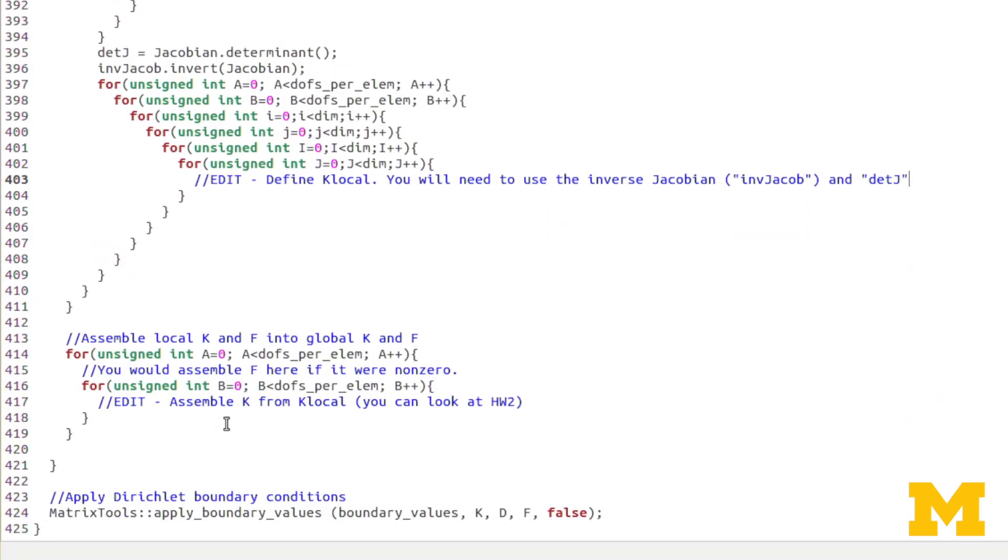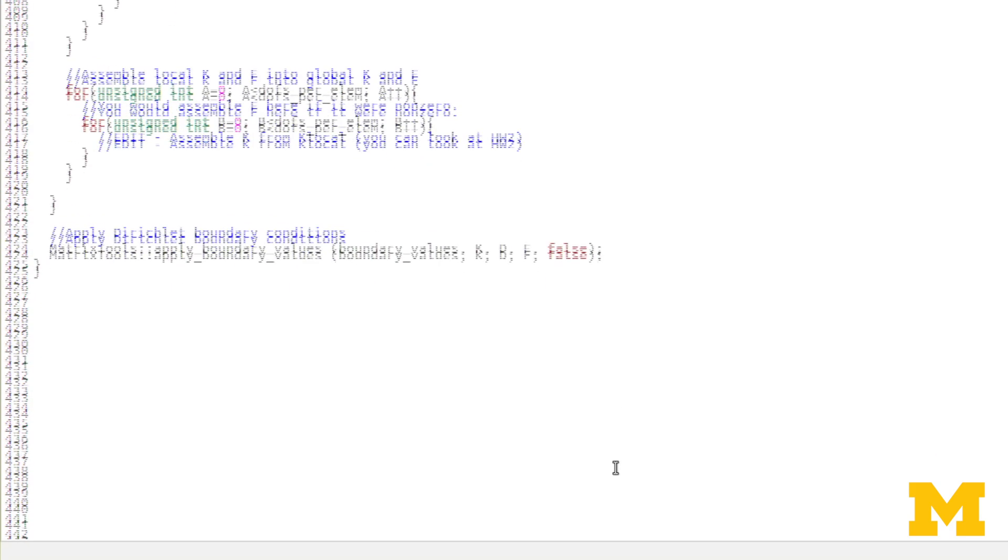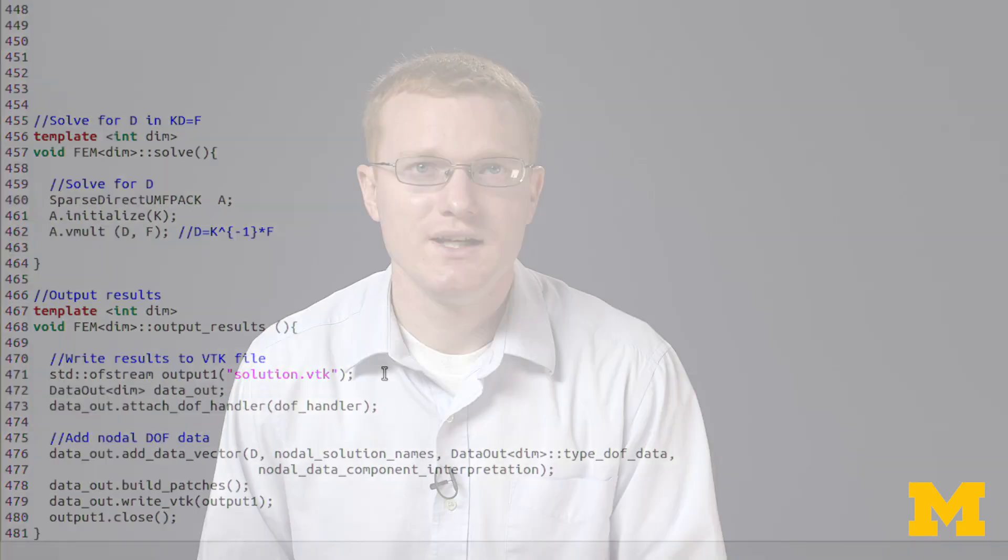You will still need to do the assemble system portion of this function, but it will be exactly the same as assembling the system in the previous homework template. We apply Dirichlet boundary conditions the exact same way DL2 will do it. Solve is exactly the same as is output results. So, again, the biggest portion that is different, or that you'll have to be working on in this template is, again, within assemble system and the basis functions themselves, as well as defining your boundary conditions. So that wraps it up for the 2D template. In the next segment, we'll quickly go over the coding template for the 3D problem on homework 3.